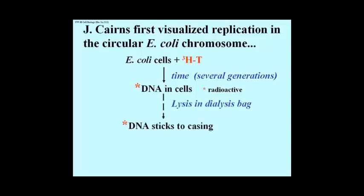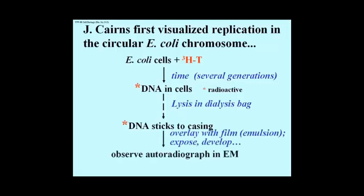The incubated cells were caused to lyse slowly in a dialysis bag. The slow lysis prevented damage to the DNA, and lysis was done in a dialysis bag because DNA sticks to cellulose, which old-fashioned dialysis bags were made of. So after the radioactive DNA stuck to the walls of the dialysis bags, Cairns emptied the bag and cut the casing into small pieces.